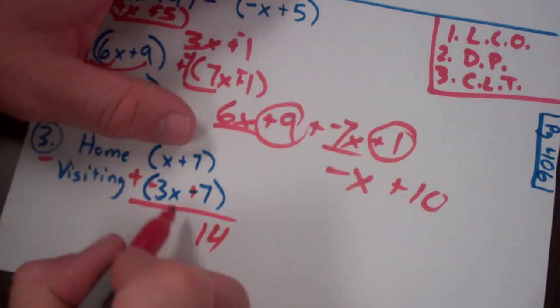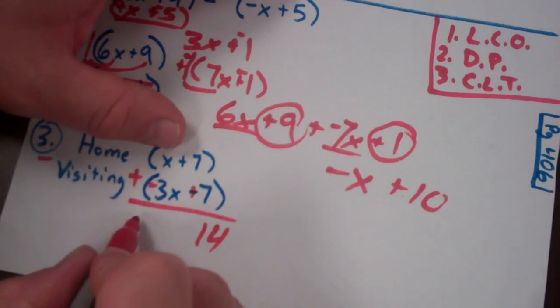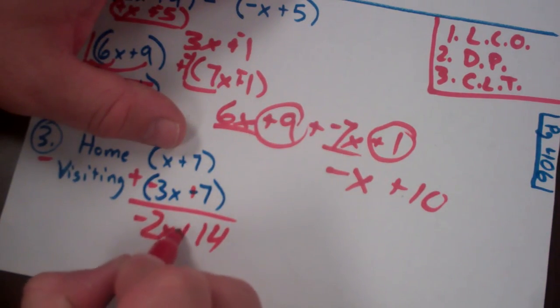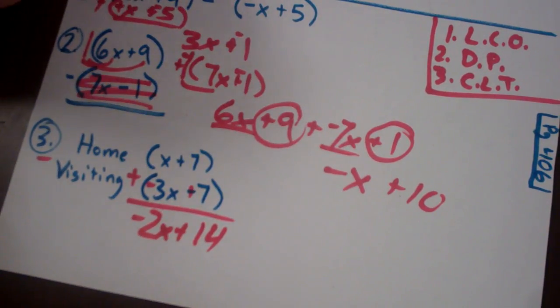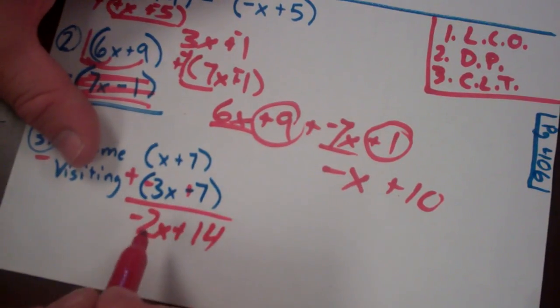Grab this. And then x and negative 3x would be negative 2x. Put the plus sign back in between. And so I could get that by negative 2x plus 14.